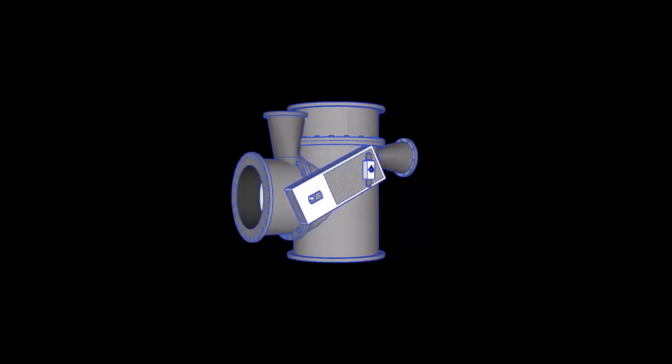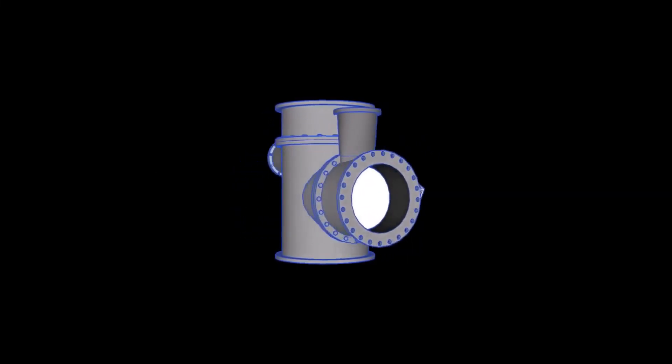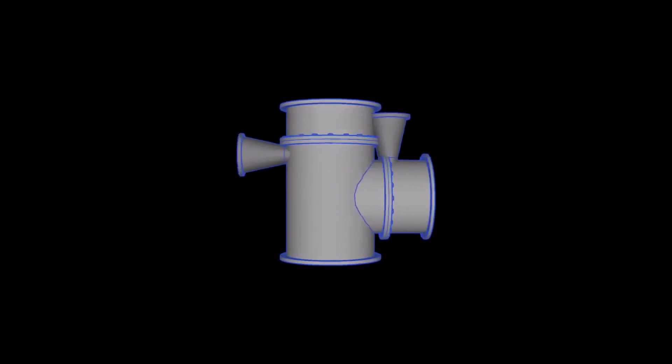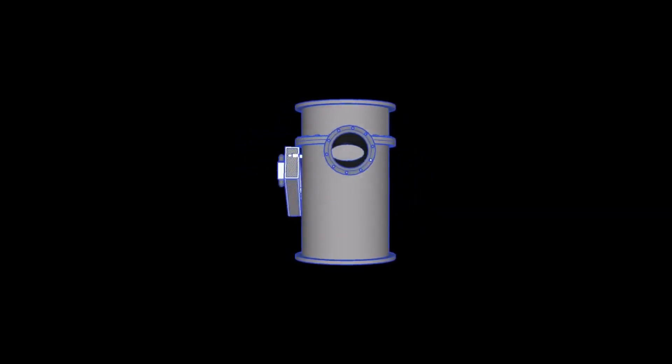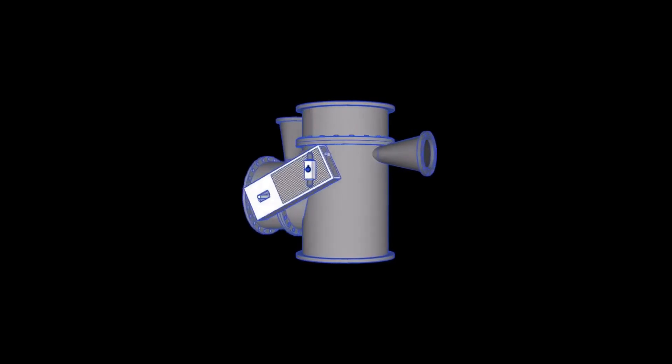The bypass damper acts as a three-way valve for the system. During the EGCS operation, it allows the flow of exhaust gas to the scrubber while preventing it from going out to the atmosphere.